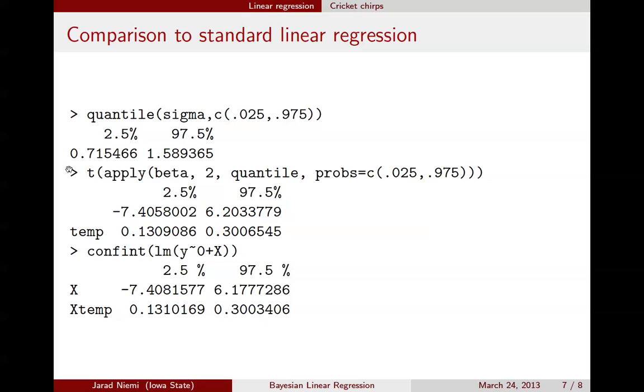Then we also have the quantiles, the credible intervals, for the intercept here, and for the temperature explanatory variable here. This would say that there seems to be a relationship between temperature and cricket chirps.